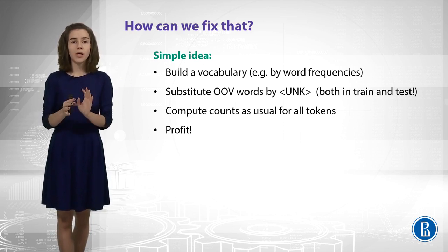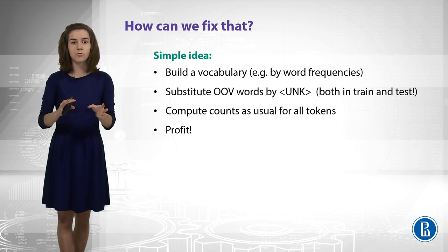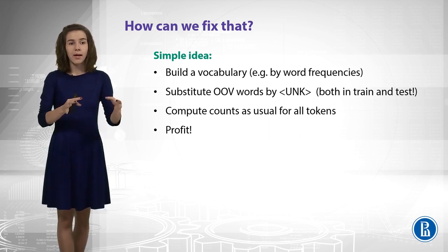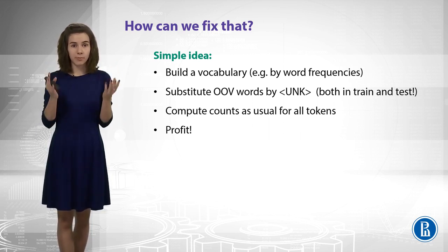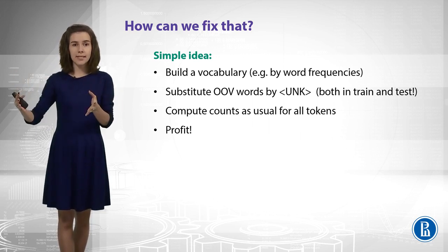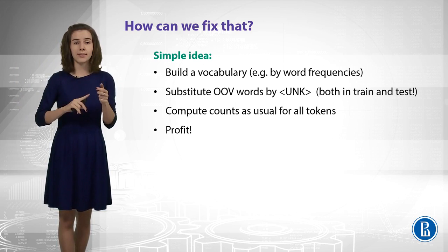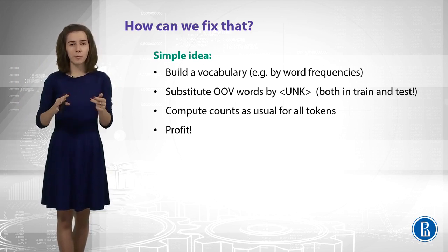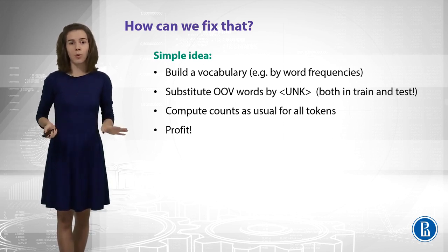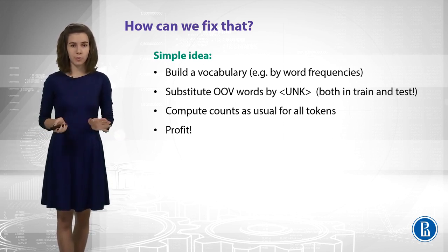So then, we compute our probabilities as usual for all vocabulary tokens and for the UNK token, because we also see this UNK token in the training data, right? And this is what we can use, because now when we see our test data, we see they are only vocabulary tokens and UNK token, and we compute probabilities for all of them. And that's okay. Now, imagine we have no out-of-vocabulary words. We could fix that.